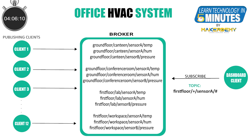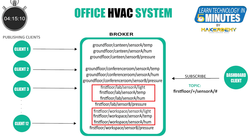Let's say that after some months, we have upgraded sensor A in the first floor to also detect light intensity. Still, with the existing wildcard implementation, you will be automatically subscribed to any new topics created under sensor A of the first floor. We hope that with these examples, you are able to understand the implementation and importance of wildcards in MQTT.